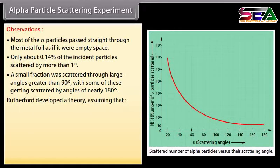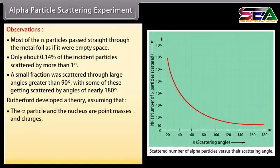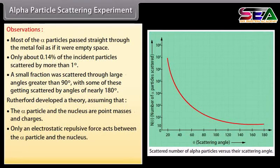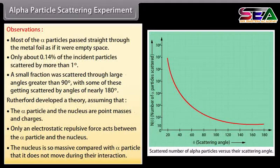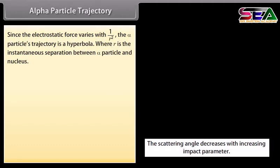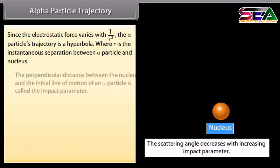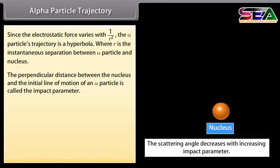Rutherford developed a theory assuming that the alpha particle and the nucleus are point masses and charges, that only an electrostatic repulsive force acts between them, and that the nucleus is so massive compared with the alpha particle that it does not move during the interaction. Since the electrostatic force varies with 1/R², the alpha particle's trajectory is a hyperbola, where R is the instantaneous separation. The perpendicular distance between the nucleus and the initial line of motion is called the impact parameter.